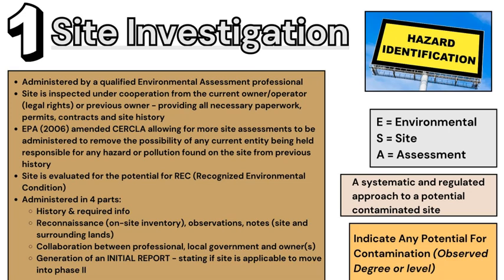The EPA in 2006 amended legislation through the federal government to ensure that these site assessments can be conducted more frequently. Prior to 2006, there was significant legal and liability fear from many owners and property controllers that they would be held responsible for anything hazardous or contaminated found on that site, with potentially substantial costs. Many people were refusing qualified personnel access to conduct phase one of the ESA. The amendment allowed owners to cooperate in finding out who is actually at fault for any hazardous or polluted contaminants found on the site.